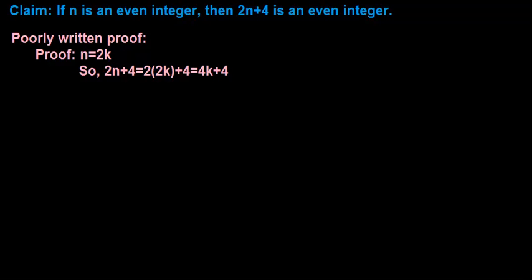An example of a poorly written proof for this claim begins with proof: n equals 2k, so 2n plus 4 equals 2 times 2k plus 4.